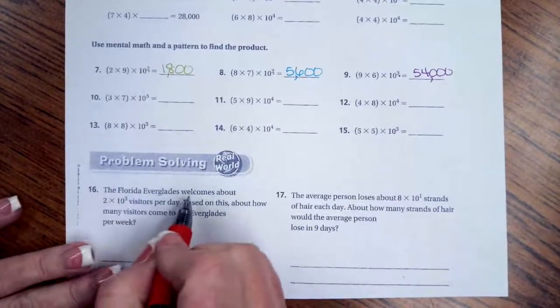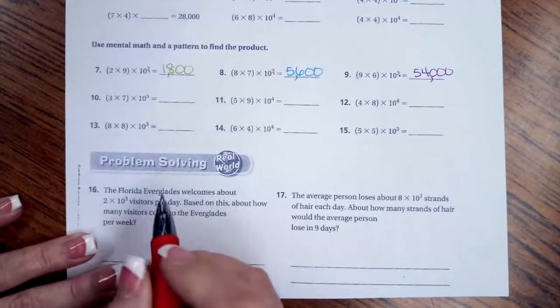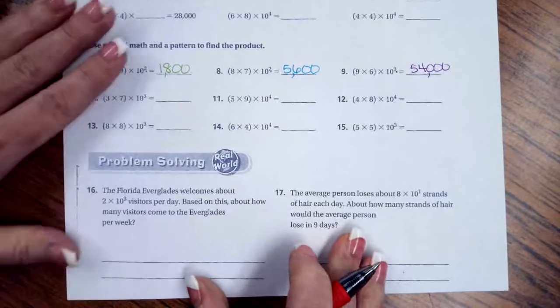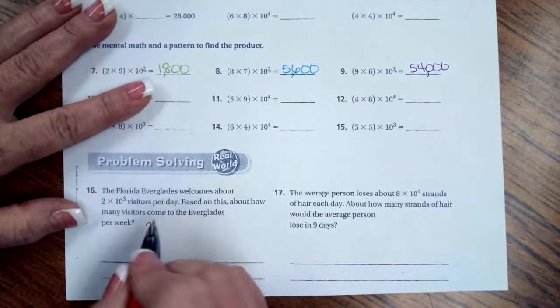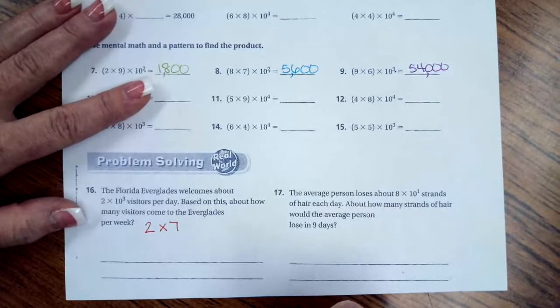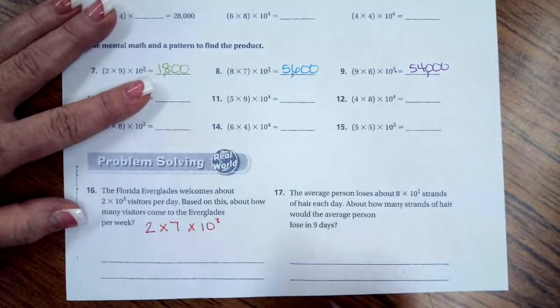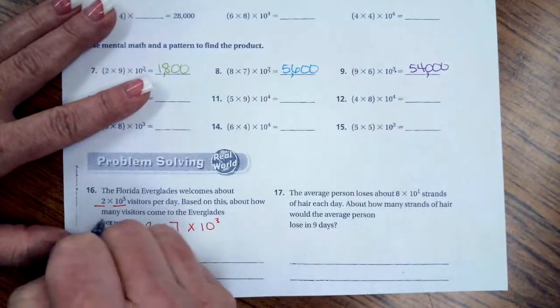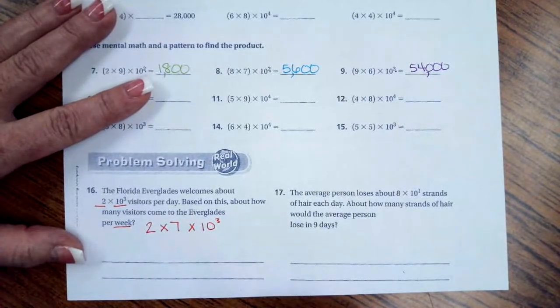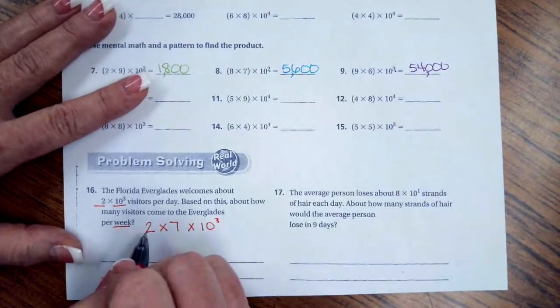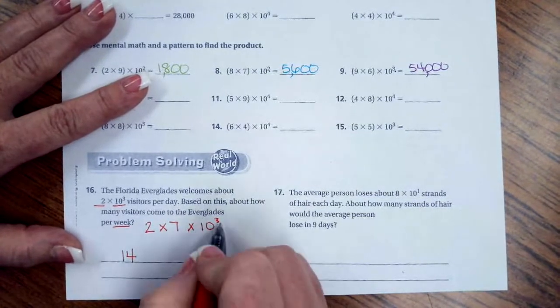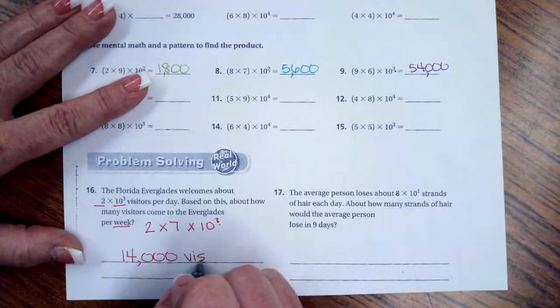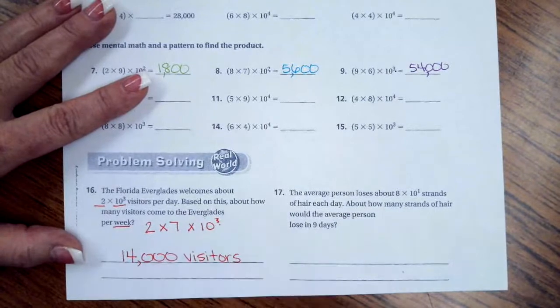So, the Florida Everglades welcomes about 2 times 3, 10 to the 3rd visitors per day. Based on this, about how many visitors come to the Everglades per week? So, we're going to have our 2, but we're going to multiply that times 7, and then times 10 to the 3rd. So, we still have our 2, our 10 to the 3rd, and then in a week, that's our 7. That's our 7 days in a week. So, 2 times 7 is 14, and then our exponent tells us to add 3 0's. So, 14,000 visitors.